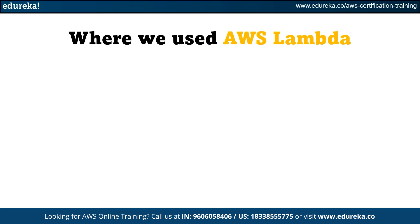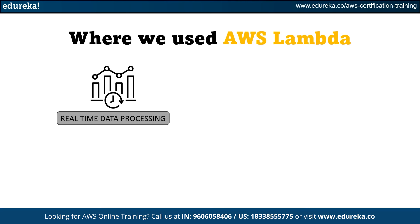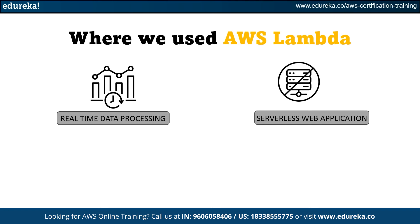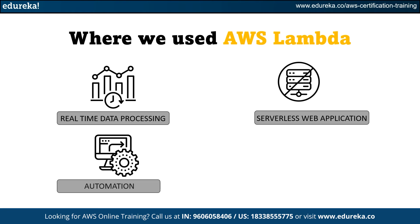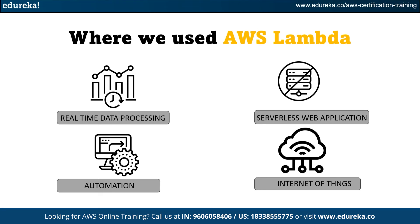So where can you use AWS Lambda? The first use case is real-time data processing — you can use AWS Lambda to process and analyze data in real time, for instance by triggering a Lambda function to process logs, clickstream data, or sensor data. The second is serverless web applications, where Lambda functions handle tasks like authentication and data processing. The third is automation — AWS Lambda is ideal for automating tasks such as creating and managing resources, backup procedures, or sending notifications. The fourth is IoT, where it's commonly used to process data from connected devices.